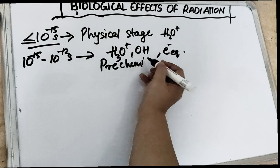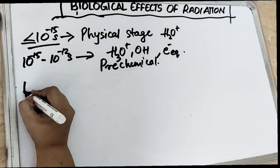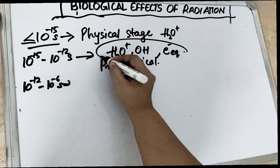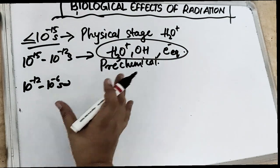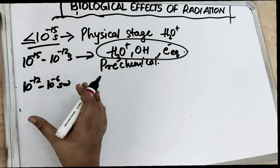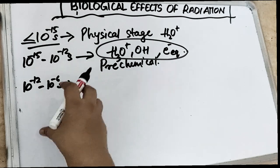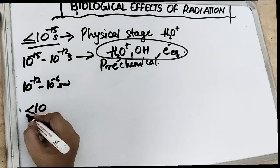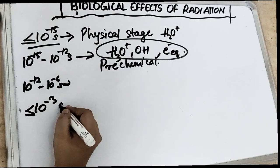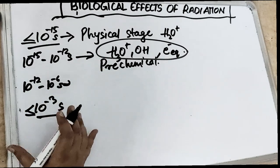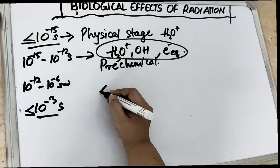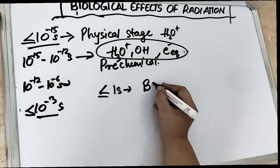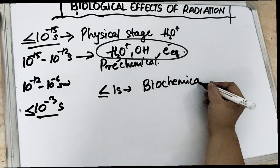The chemical stage occurs from 10⁻¹² to 10⁻⁶ seconds, where all these species are either reacting with each other or becoming widely separated in intra-tract reactions. When exposure is up to 10⁻³ seconds, radicals form with biological molecules. At less than or equal to one second, biochemical changes start to occur.